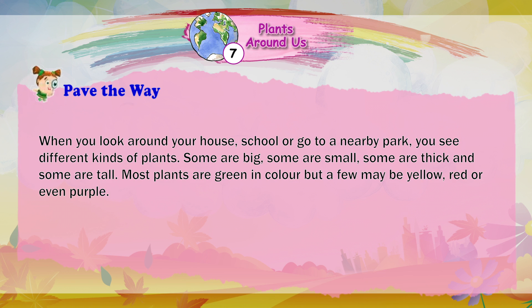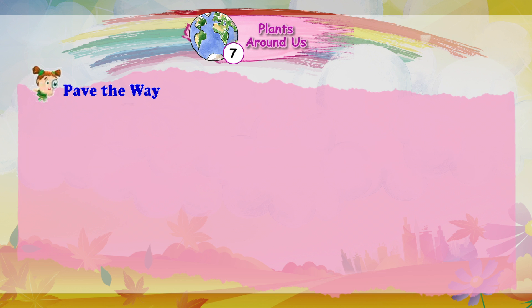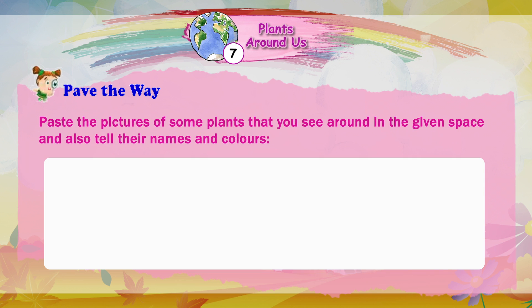Some are big, some are small, some are thick and some are tall. Most plants are green in colour, but a few may be yellow, red or even purple. Paste the pictures of some plants that you see around in the given space and also tell their names and colours.